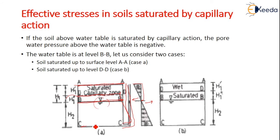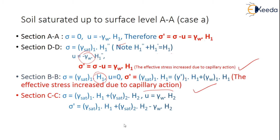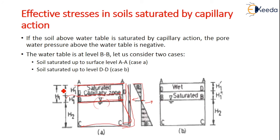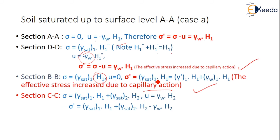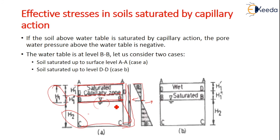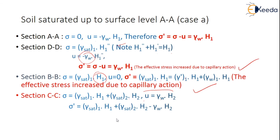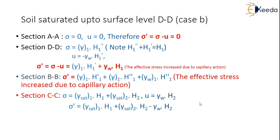At section CC (below the water table): sigma = gamma_sat1·h1 + gamma_sat2·h2. The pore water pressure is u = gamma_w·h2 (positive, since we are below the water table). Therefore sigma' = gamma_sat1·h1 + gamma_sat2·h2 − gamma_w·h2.